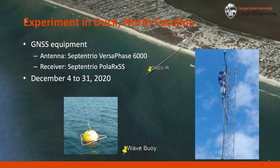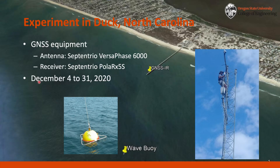We conducted an experiment in Duck, North Carolina. A Septentrio antenna and receiver were installed. The GNSS antenna was mounted on top of a tower to secure a clear view toward the ocean surface. Then we collected the GNSS signals from December 4 to 31.